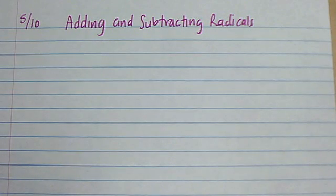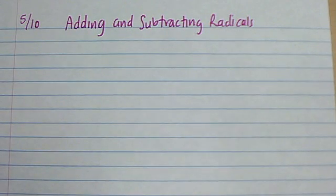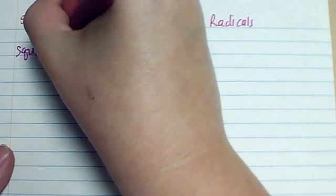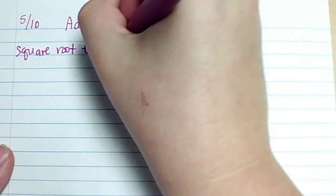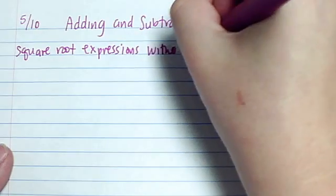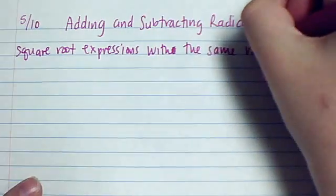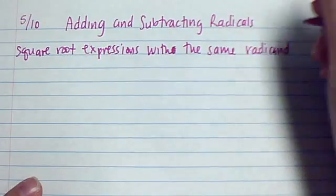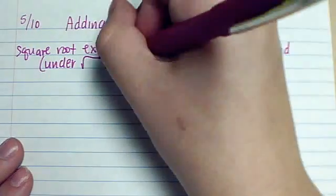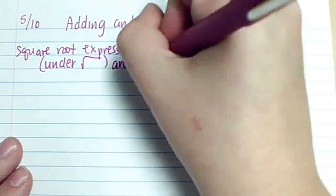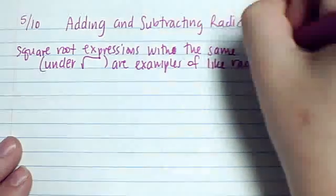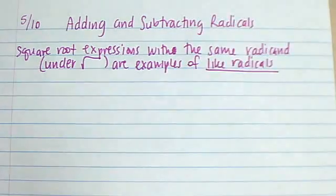Today in algebra we're adding and subtracting radicals. In order to do this, the square root expressions with the same radicand — and radicand is whatever is underneath the square root — are examples of like radicals. In order for us to add or subtract, they need to be like radicals.